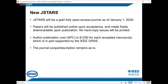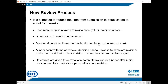JSTARS will be a gold OA journal. Gold OA means the authors need to pay the publication cost. Each paper will be charged $1,250 with some financial support from the IEEE GRSS. Papers will be published online right after acceptance and made freely downloadable upon publication. No hard copy issues will be printed. The journal scope and description will remain as before. The big challenge is that IEEE requires OA journals to reduce the time from submission to e-publication to 12.5 weeks — it's currently about 30 weeks — so we need some actions to make this happen.